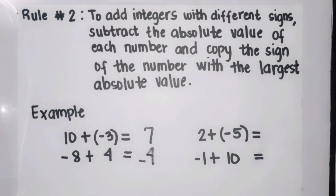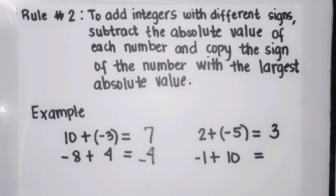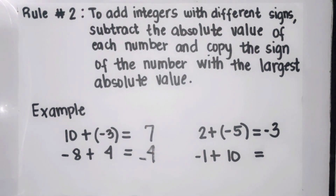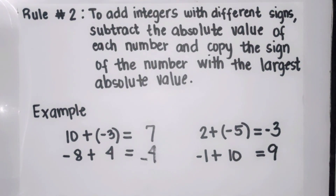Another example: two plus negative five. Let's subtract — five minus two is three. Negative five has the larger absolute value, so we copy its sign, which is negative. Therefore two plus negative five is negative three. Next: negative one plus ten. Ten minus one is nine, and since positive ten has the larger absolute value, our final answer is nine.